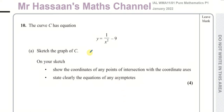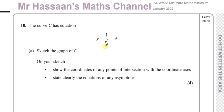Welcome back to Mr. Hassan's Maths Channel. I'm answering question number 10 from the January 2022 International A-Level Pure Mathematics P1 paper. This question is about a curve called C, where y equals 1 over x squared minus 9, and we're asked to sketch the graph of C.